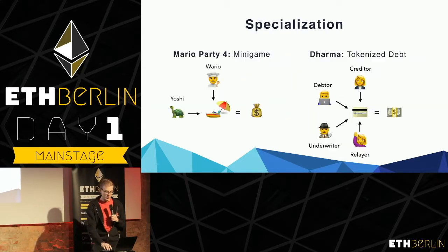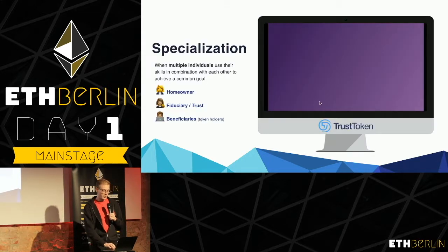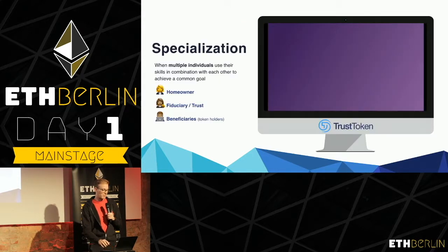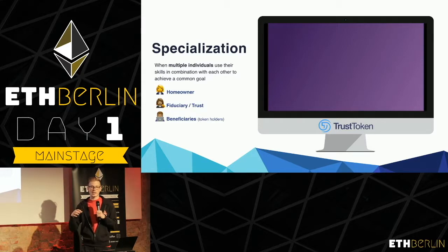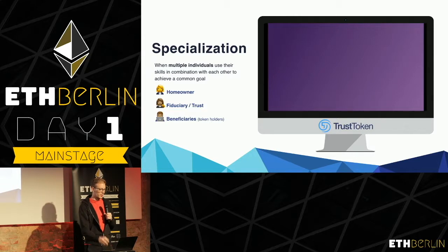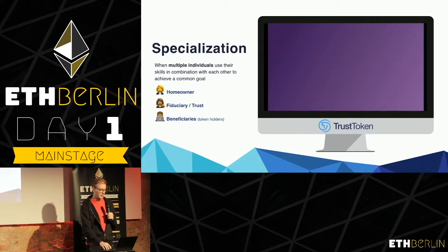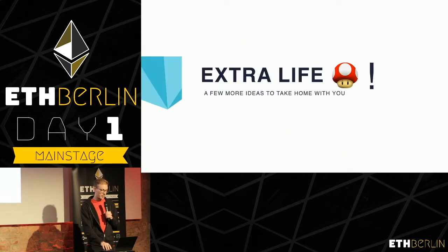The diagram shows the parallels involved in both of these. Another project doing something similar where multiple people with specializations come together towards a common goal is TrustToken, where you're tokenizing and creating security tokens for, say, a house. The homeowner owns the house and gives it to a trust run by a fiduciary who's legally responsible for acting out the trust's will. They can tokenize the house and give it to beneficiaries, who can then vote on who to rent the house out to in an Airbnb situation. There are parallels here as well.